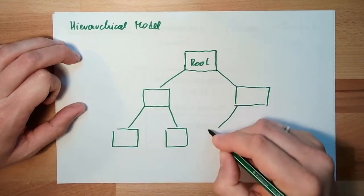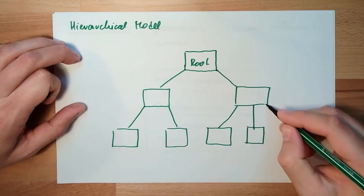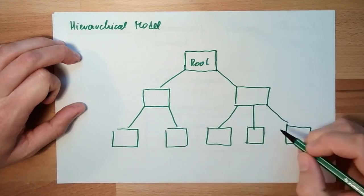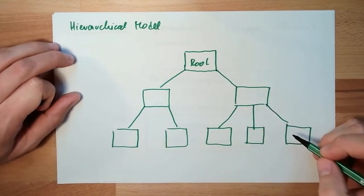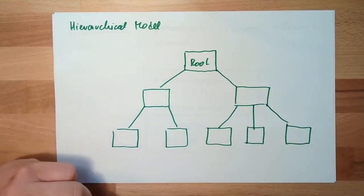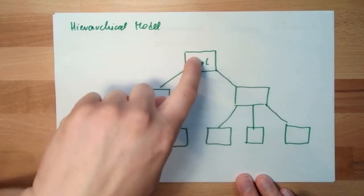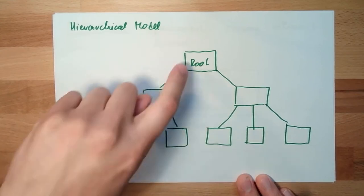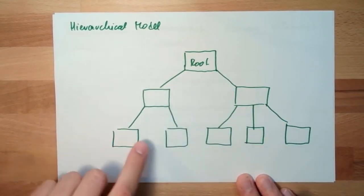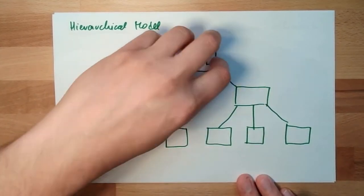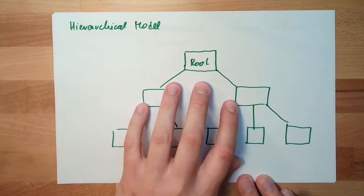So every element except root has exactly one parent element and might have several child elements. And if I want to search my data, I will always have to start in root and find my way through. So the searching was very efficient. This looks a little bit like a file system.